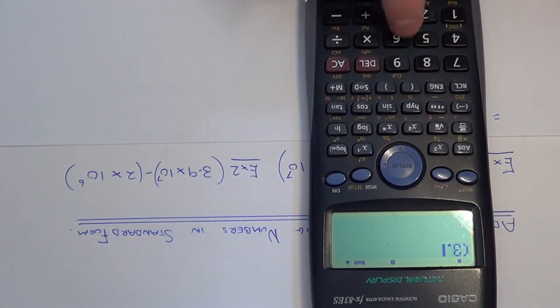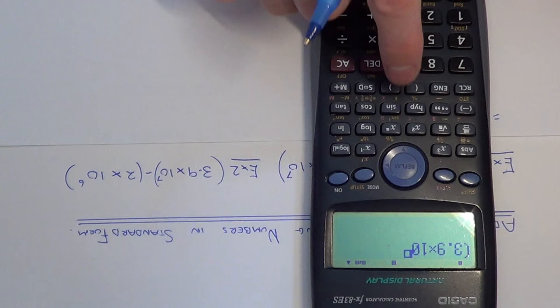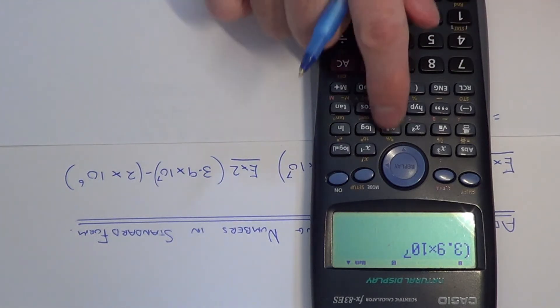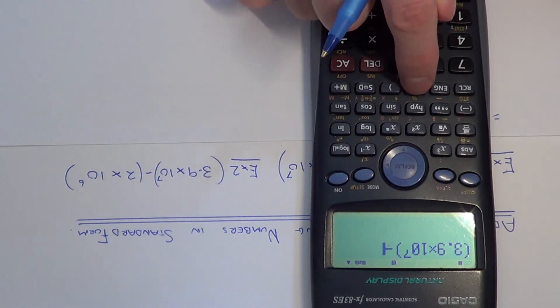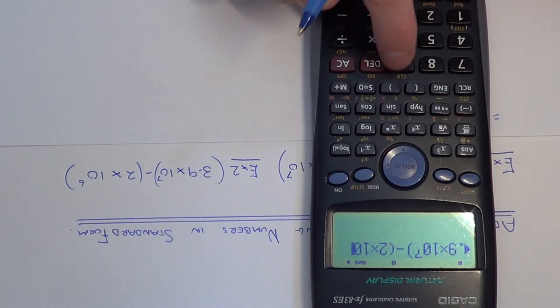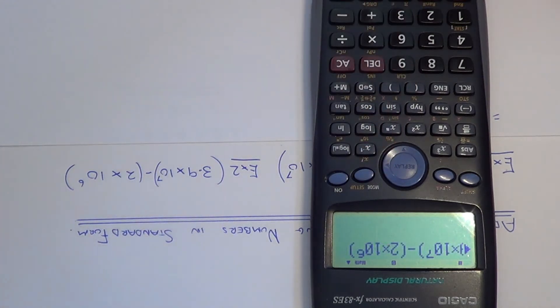So again, type your first number in exactly as it appears on the page. There's your power button there again. So I've typed it in exactly as it appears. Hit your equals key.